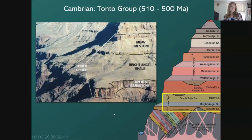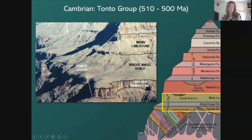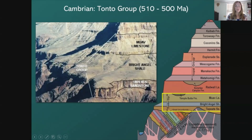Since I'm focusing on the Paleozoic, I'm going to start at the lowest formation and work my way up to the youngest. We start at the oldest, the Cambrian period, represented in Grand Canyon by the Tonto Group, about 510 to 500 million years old. It consists of three formations: the Tapeats Sandstone, the Bright Angel Shale, and the Muav Limestone. I'm going to focus on the Bright Angel Shale since it contains the majority of Cambrian fossils here.